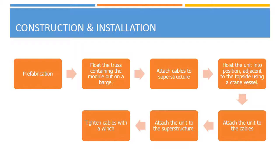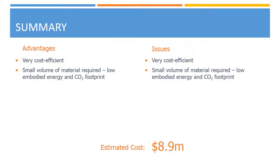The design process is depicted. Adding the new module directly to the superstructure imposes significant additional loads on the structure, which may go beyond its design loading. After consulting with the client, we determined that the feasibility of the solution is dependent upon specific topside data. It is unlikely that the local loading can be supported by the topside, and therefore members will require reinforcing. This will lead to potentially significant delays in gas production, and therefore this is probably not a viable solution.